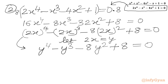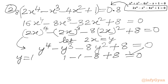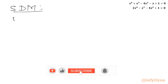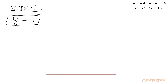The first root is clearly visible. Plugging in y = 1: 1 - 1 - 8 + 8 = 0. So y = 1 is a root. Applying synthetic division with base solution y = 1 and coefficients 1, -1, -8, 0, 8, we obtain the reduced cubic coefficients.